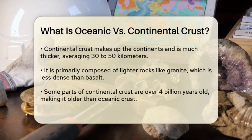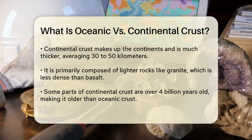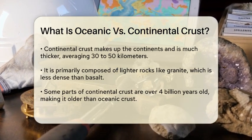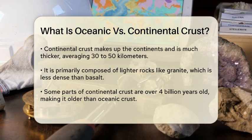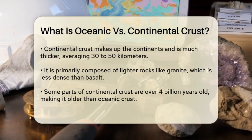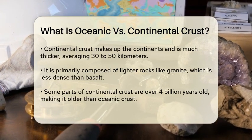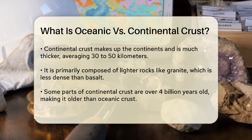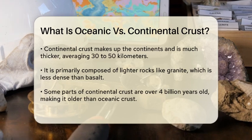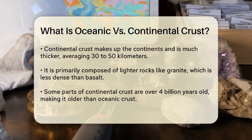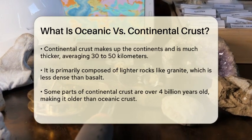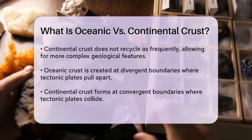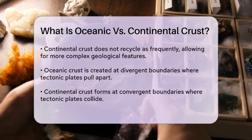On the other hand, Continental Crust is the layer that makes up the continents. It is much thicker than Oceanic Crust, averaging about 30 to 50 kilometers in thickness, and can be even thicker in mountain ranges. Continental Crust is primarily composed of lighter rocks such as granite, which is less dense than basalt.